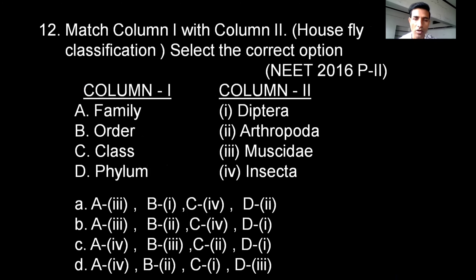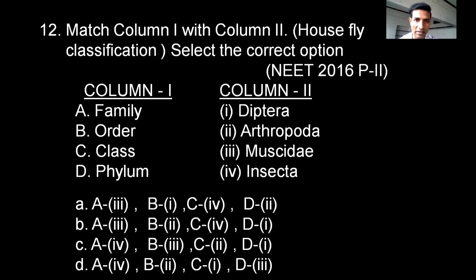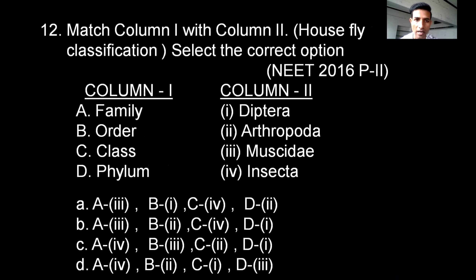Next question presents Column 1 and Column 2 showing the classification of housefly, and we have to select the correct matching option. The family of the housefly is Muscidae, order is Diptera, class is Insecta, and phylum is Arthropoda. The correct option is A.